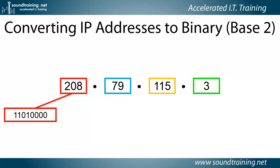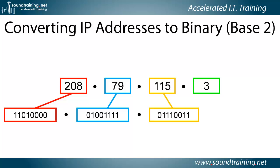So 208 maps to 1101 0000, 79 maps to 0100 1111, 115 maps to 0111 0011, and 3 maps to 0000 0011.